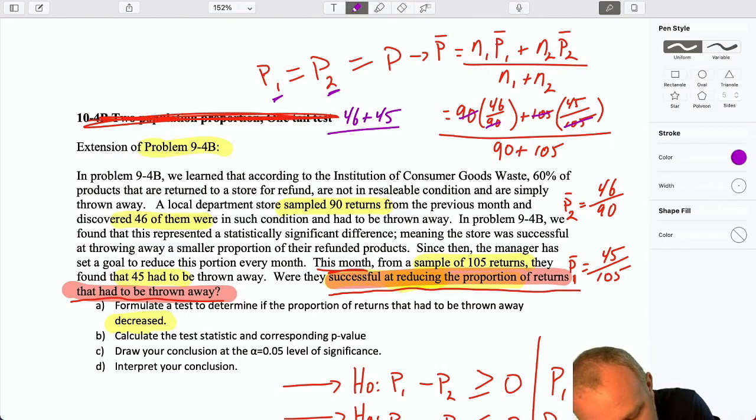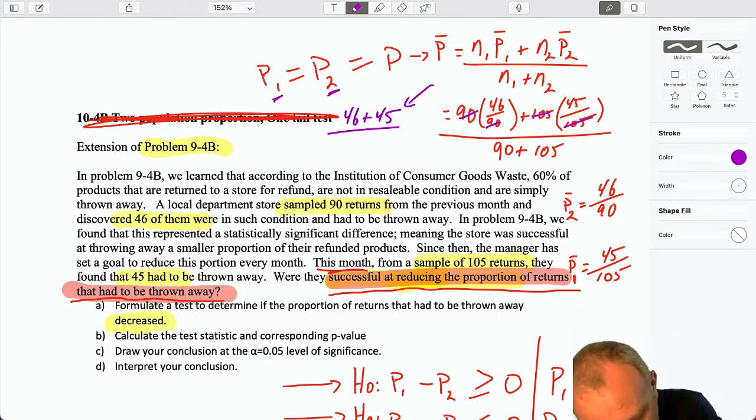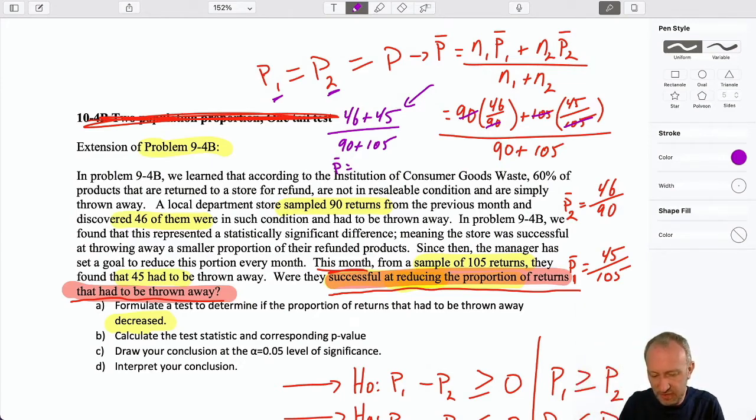And so in this calculation, it's just simply the number of yes responses, or the number of observations, that meet that criteria. It doesn't matter if it was last month or this month. It's the number that had to be thrown away, out of the total number. And so that gives us our pooled estimator, let's see here, 46 and 45, divided by 195, that gives me my pooled estimator of 4.6 repeating, so let's just say 0.467.